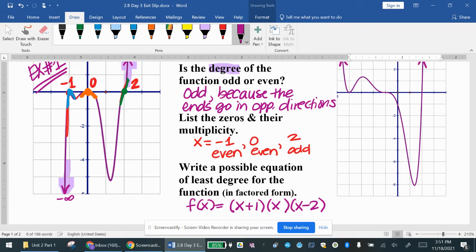Because some of these had even multiplicity, it means that they're multiples. So you're going to give an even exponent to the even zeros or the even roots. So negative one was even. I'm going to put an even exponent and they want the least degree. So the smallest even number is two.